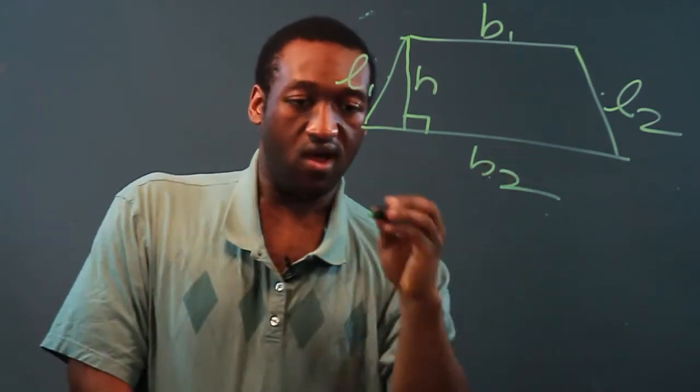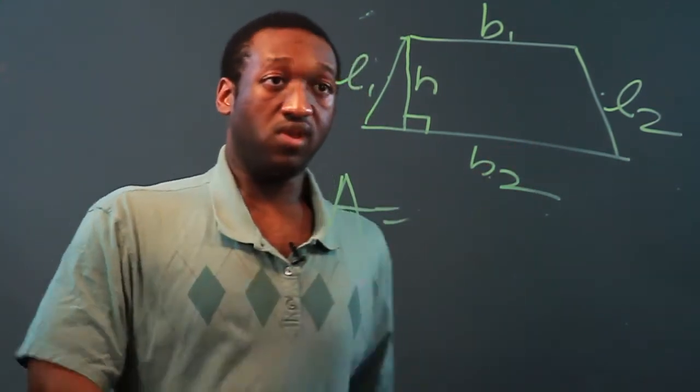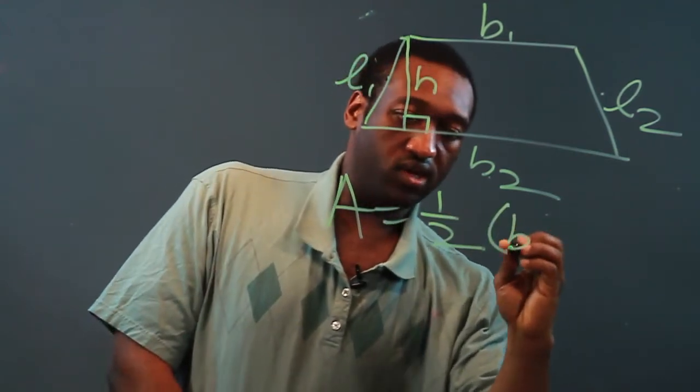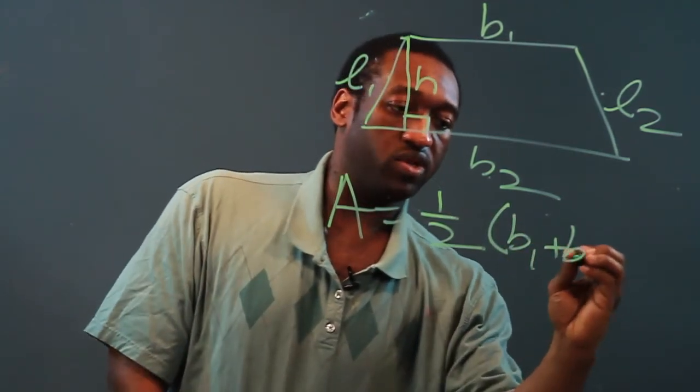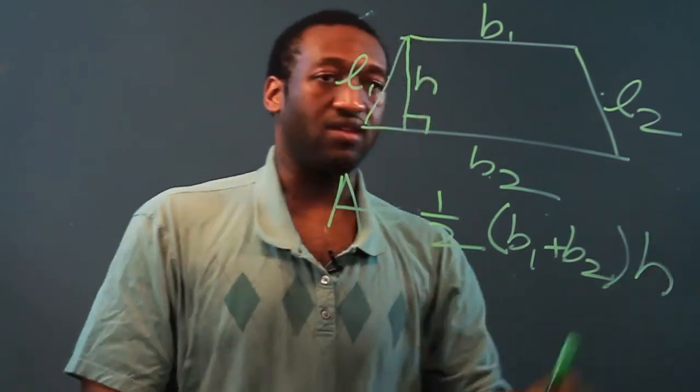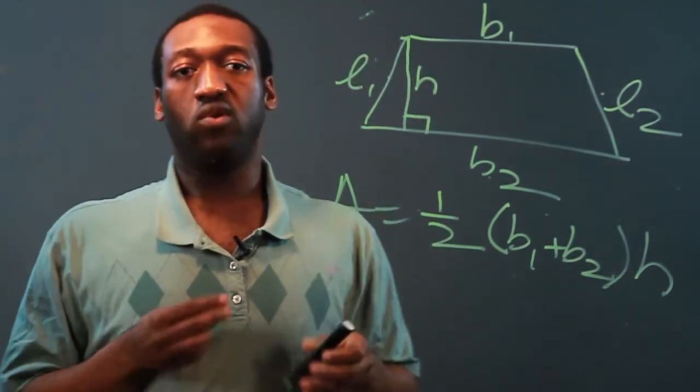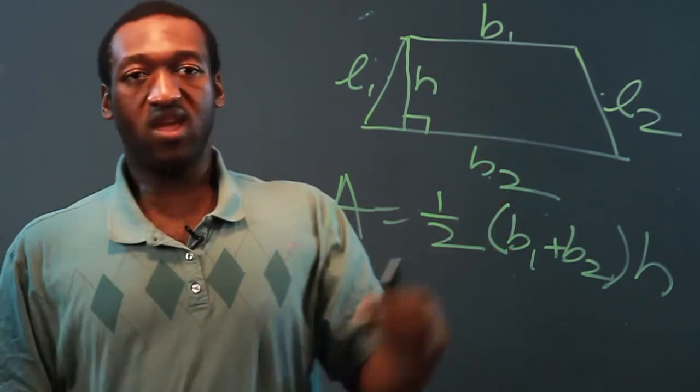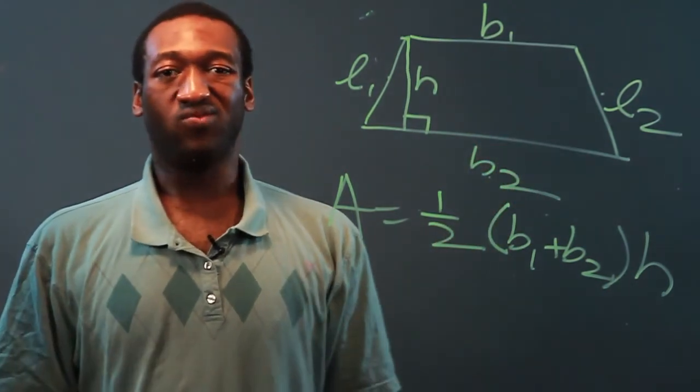Now, to find the area of a trapezoid, we could say one-half the sum of the bases, which would be base 1 plus base 2, times the height. So use these formulas in finding the area of a trapezoid and a parallelogram. Thanks for watching.